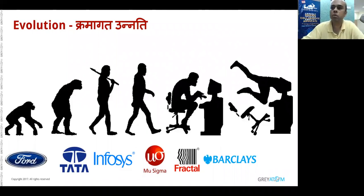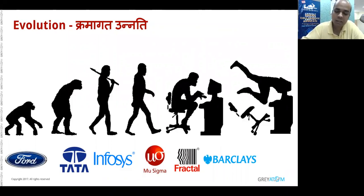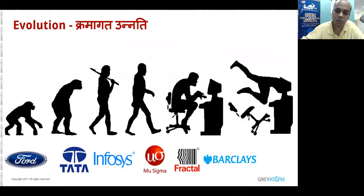We're now seeing the productization of data and data products. This applies not just to big companies like TCS, Ford, and Barclays — data science is for companies of all sizes. Even a small startup in Bangalore still needs data science to differentiate itself. Large companies like TCS, Infosys, Accenture, and Capgemini are creating tons of data science jobs, but startups — 10,000 in NCR, 6,000 in Mumbai, 12,000 in Bangalore — will create the next hundred thousand data science jobs.